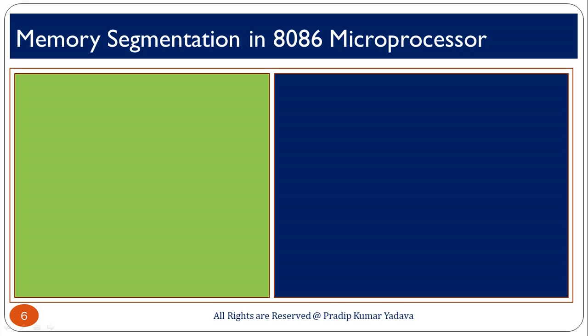Hello friends, I am Pradeep Yado and today in this video I will discuss about memory segmentation in 8086 microprocessor. This is a very important property of 8086 that differentiates it from 8085 microprocessor, because 8086 supports memory segmentation whereas 8085 does not. I will discuss what is memory segmentation, the rules, advantages, types, and also take some practical examples.